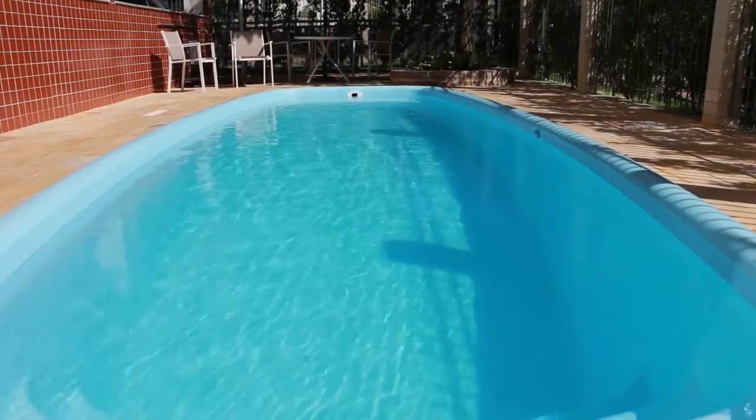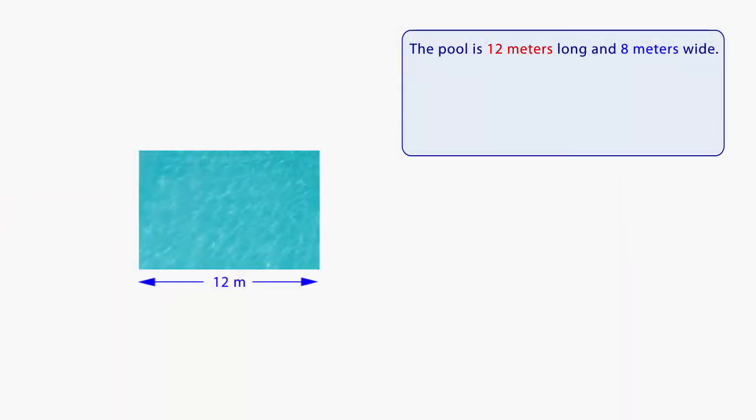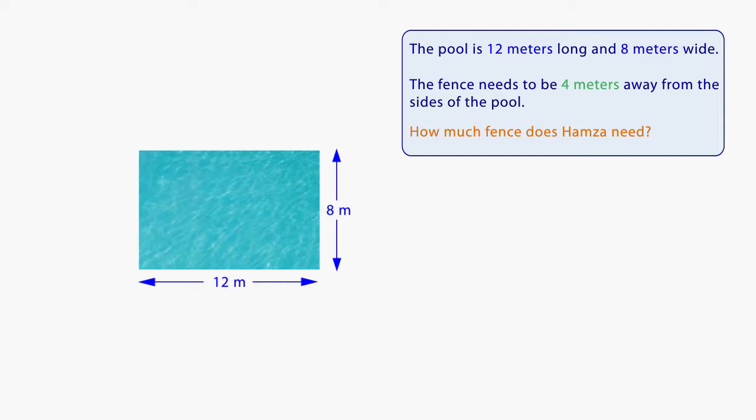Hamza has a pool at his house. It is 12 meters long and 8 meters wide. He wants to put a fence around the pool. The fence needs to be 4 meters away from the sides of the pool. How much fence does Hamza need?